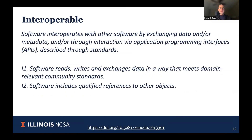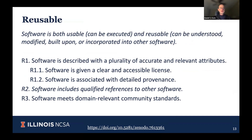Interoperable for software means how software interoperates with other software — by exchanging data or through APIs described through standards, and including qualified references to those other objects. Reusable means first that the software is usable and can be executed, and then that it can be reused — understood, modified, built upon, or incorporated into other software. The main point is that because software is different from data, the principles in some cases also need to be different, though in many cases they remain similar.